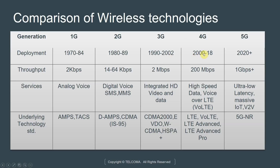Moving on to 4G, we saw its emergence around the 2008 era with 3GPP Release 8. Technologies like HSPA+ were already being marketed as 4G. The throughput went up to around 200 megabits per second. New services included high-speed data and Voice over LTE, and the underlying technology standards were LTE, Voice over LTE, LTE Advanced, and LTE Advanced Pro.